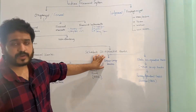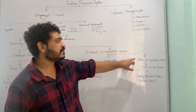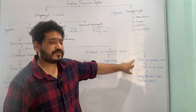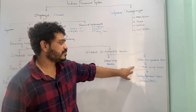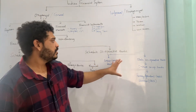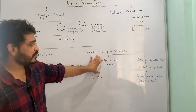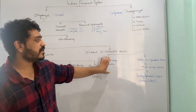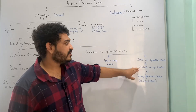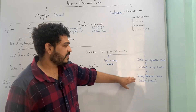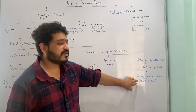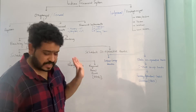Cooperative banks can be looked at from two different angles. One is urban cooperative banks, and the other is the classification of state cooperative banks into district cooperative banks and primary agricultural credit societies. The first distinction is urban cooperative banks, and the second is state cooperative banks, under which we have district cooperative banks and then primary agricultural credit societies, which are at the rural or grassroots level.